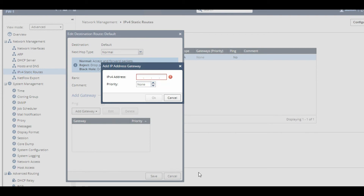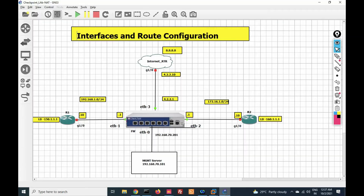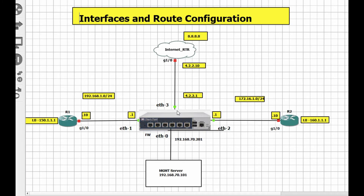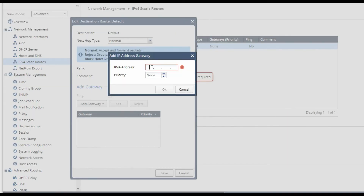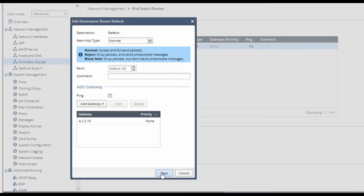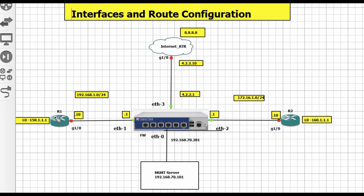You can see the default route is already listed. Double-click to edit it. You can add a gateway or an interface. For my default route, the traffic goes towards the internet, so my next hop will be the internet-facing gateway. Go to the GUI, provide the next hop IP address for the default route, click OK, and save.